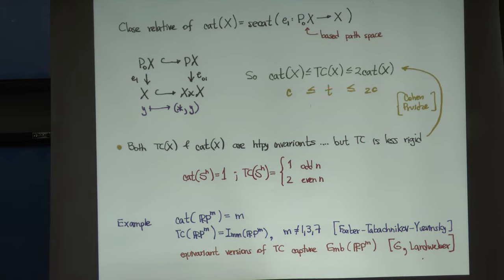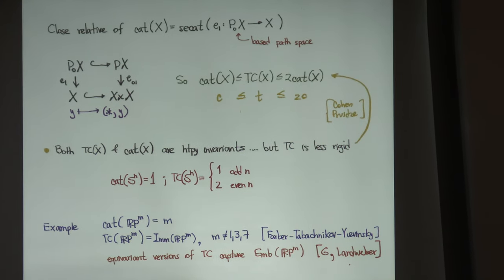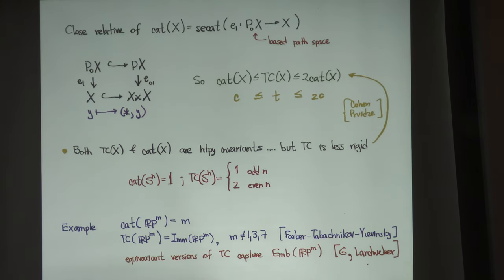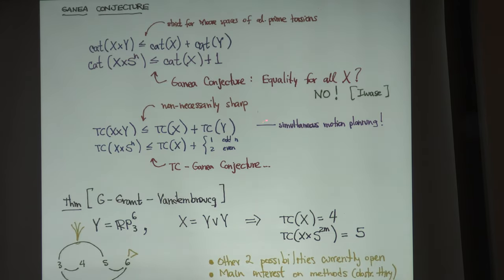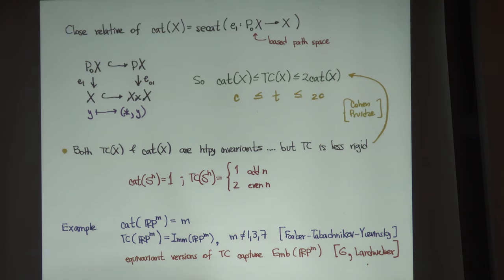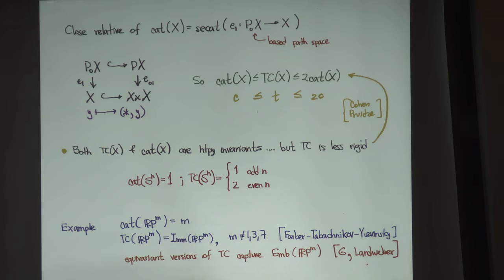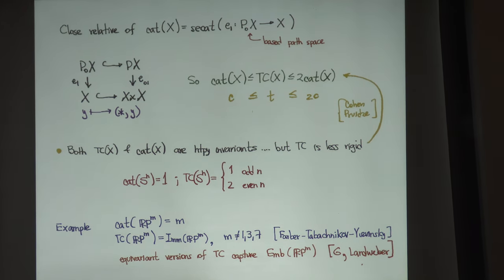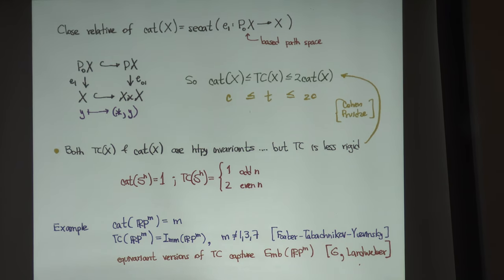Topological complexity lies between these two numbers. It is more flexible than category. Here's one thing I learned from Dan Cohen, lecturing on this in 2013: suppose you take two numbers c and t satisfying this inequality. Then there is always a space whose category is c and whose topological complexity is t. In other words, TC can distinguish among many spaces that category would not be able to distinguish.